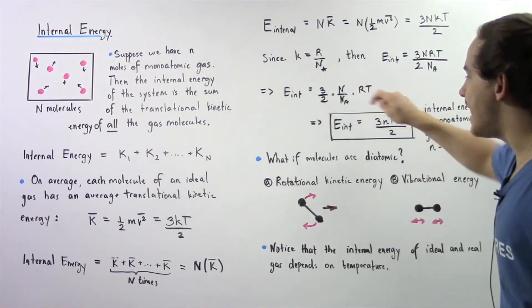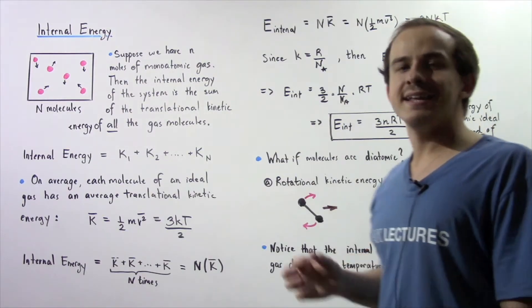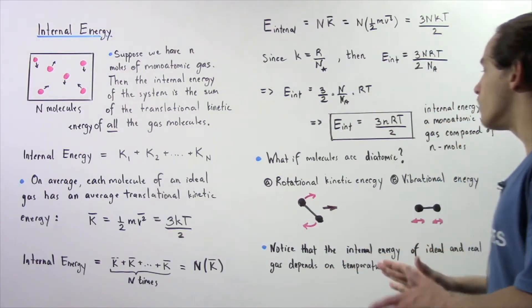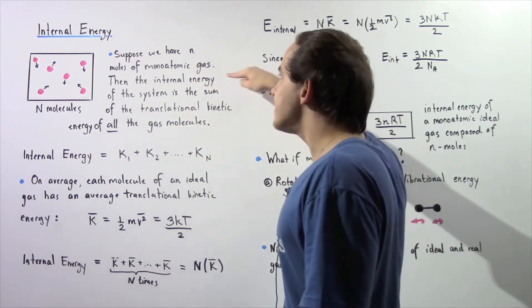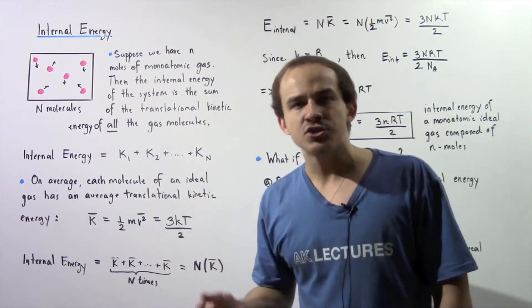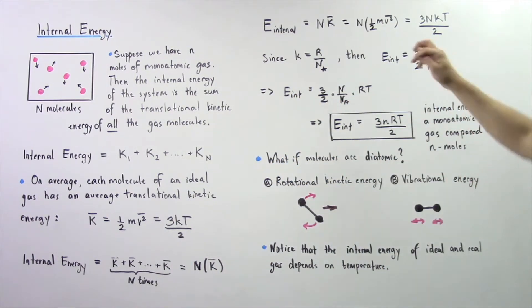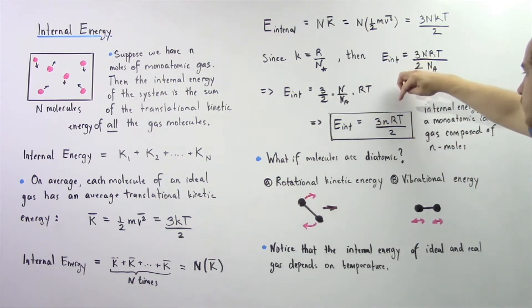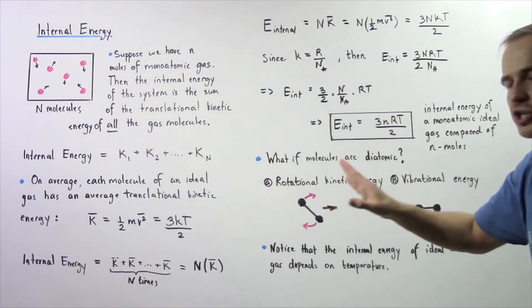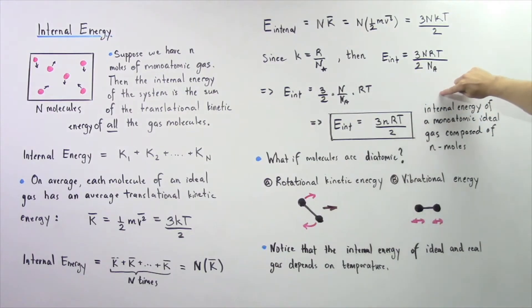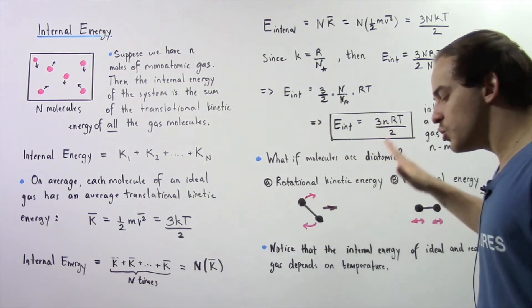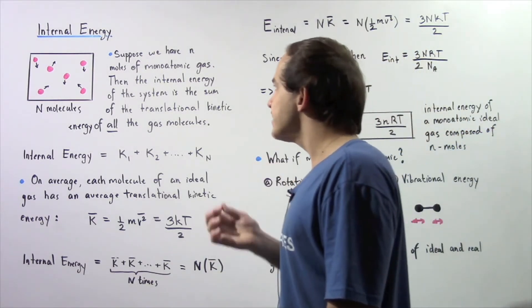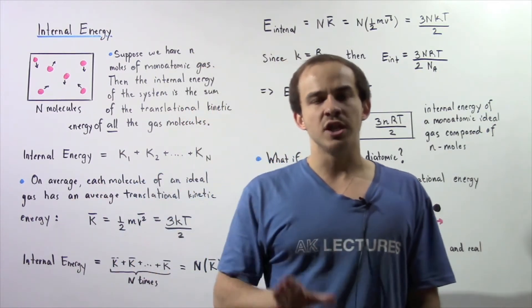We can replace N divided by NA with lowercase n, where lowercase n is the number of moles in our system. So it turns out that the internal energy of our gaseous system — composed of monatomic gas molecules that only have translational kinetic energies — is equal to (3/2)nRT, where n is the number of moles, R is the universal gas constant, and T is the temperature in Kelvins. This equation only works as long as we have a monatomic gas with only translational kinetic energies.